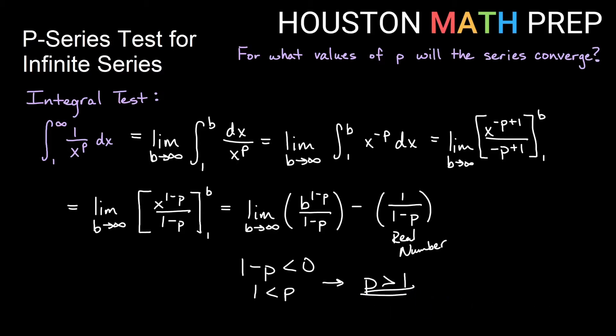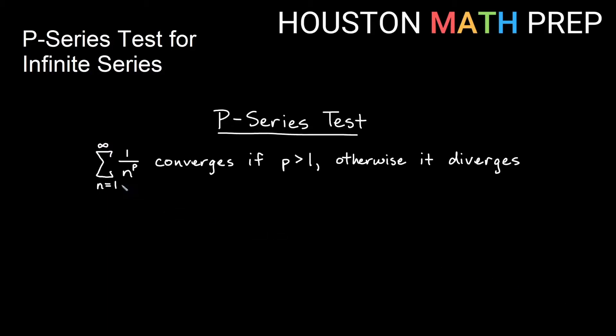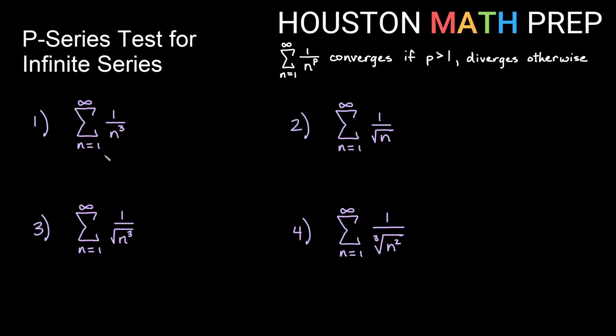Our p-series test tells us if we have the infinite sum of 1 over n to some positive power, as long as that positive power is bigger than 1, then the series will converge. If that positive power is not greater than 1, then it will diverge.